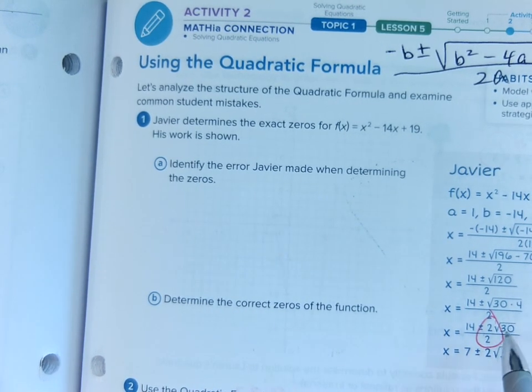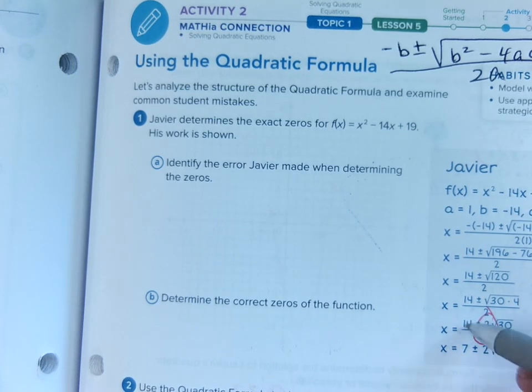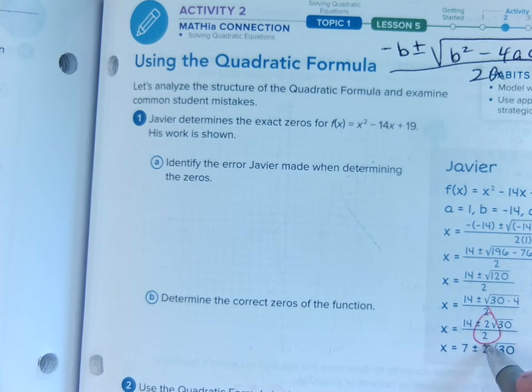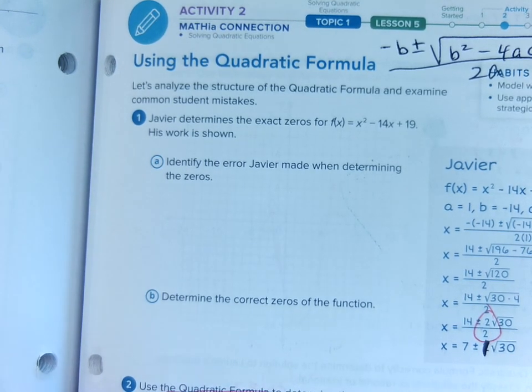Because then he does get 2 square roots of 30, but he divides the 2 here and the 2 here. So then he forgot to make that a 1, and that really would have made Javier's mistake much better. But let's finish up this problem for him.